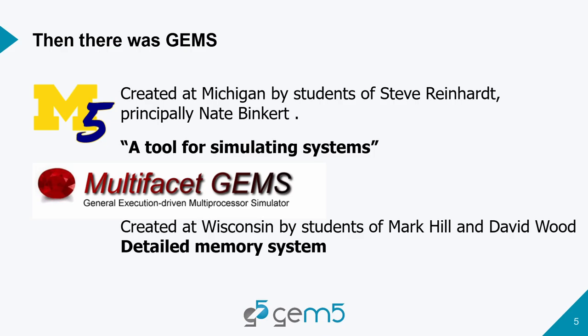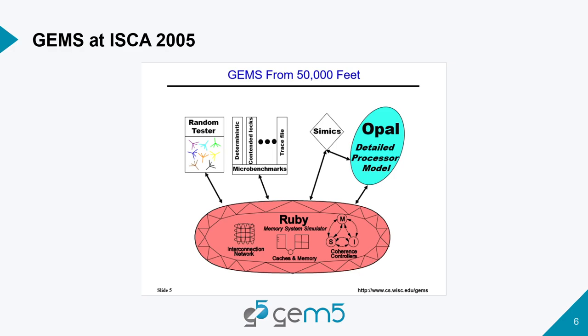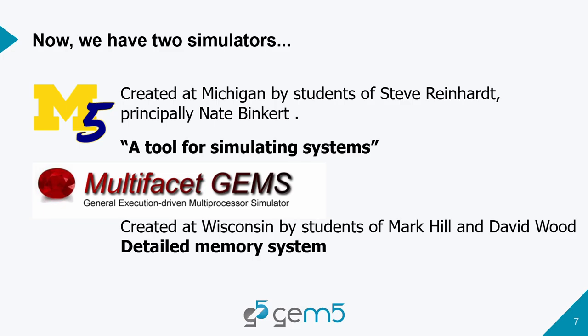Around the same time, there was a project called Multi-Facet GEMS at Wisconsin — students of Mark Hill and David Wood. GEMS really focused on a detailed memory system. Interestingly, they also had a tutorial at the same ISCA in 2005 about GEMS. At the high level, GEMS included something called Ruby, which was a memory system. GEMS hasn't changed that much since then either — we still have Ruby and we're still using it today. So we had these two simulators, M5 and GEMS, combined together in 2011 to make GEM5.